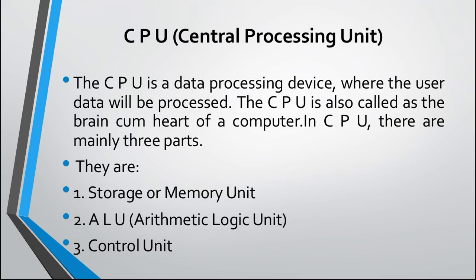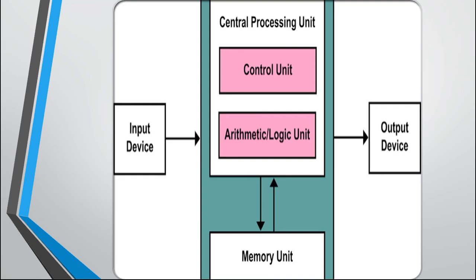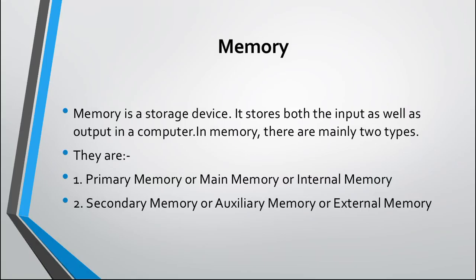Let's review the block diagram of a computer again. The user gives input with the help of keyboard and mouse. The central processing unit processes the data, controls the operations, and after processing sends the data to the memory. The memory stores the data and can also send it back to the CPU. The CPU then sends the final data to the output devices, where we get the output result via monitor, plotter, and printer. I hope you understand all the concepts — thank you.